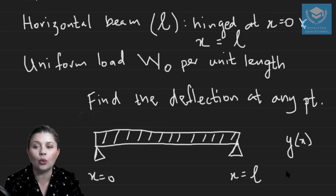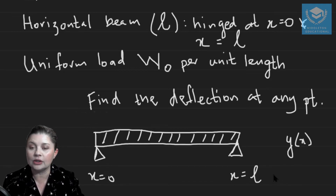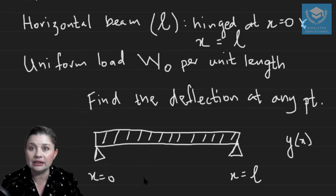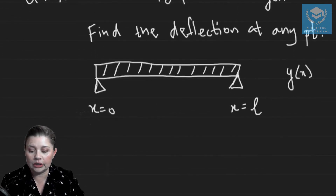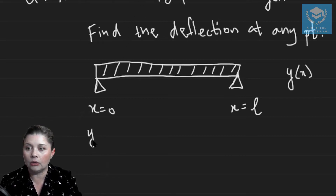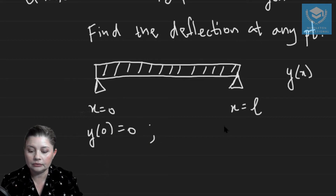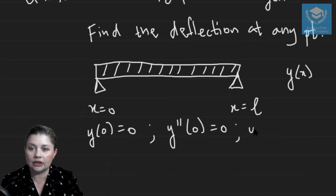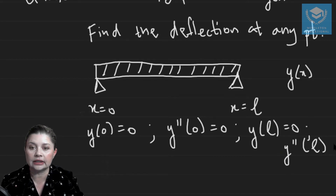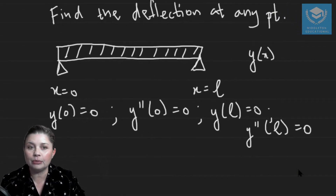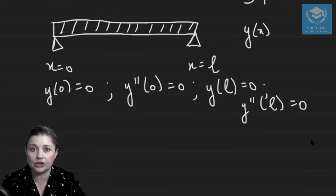First you need to figure out what your differential equation is going to be. We have a uniform load W₀, and we know where the hinges are — where it's simply supported — which tells us our initial conditions. Because you have a simply supported beam, your initial conditions are: Y(0) = 0, Y''(0) = 0, Y(L) = 0, and Y''(L) = 0. The type of beam you have informs what initial conditions you'll work with.